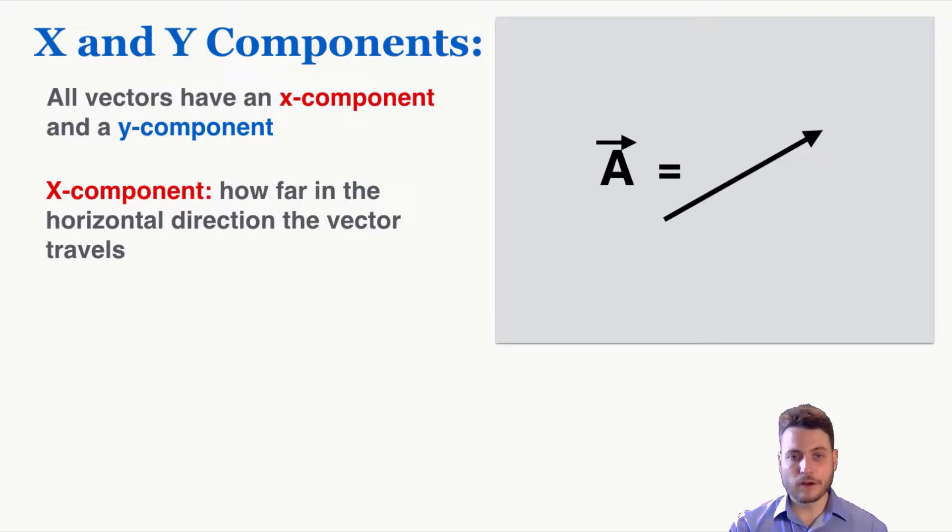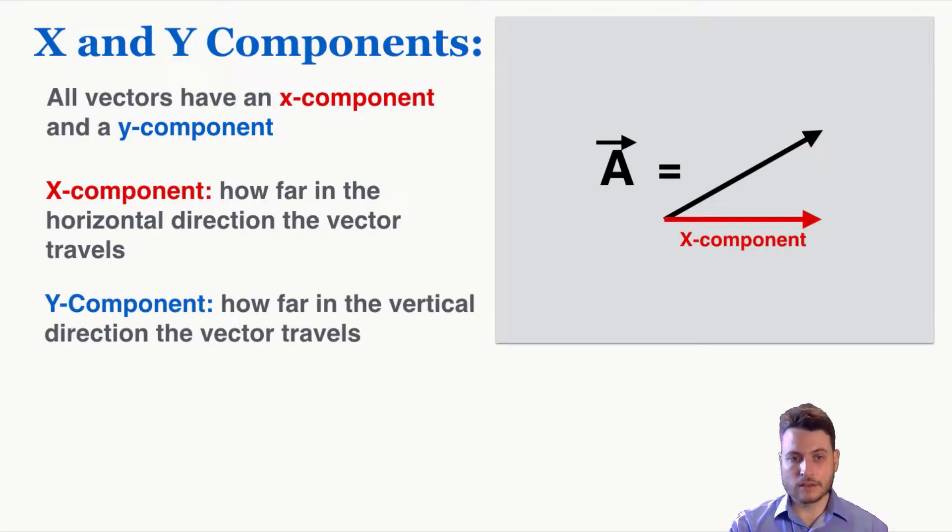The x component is how far in the horizontal direction the vector travels. So if this is vector A, this is its x component right here, and its y component is how far in the vertical direction the vector travels. So that would be the y component of vector A, that's how far in the up down direction it goes.